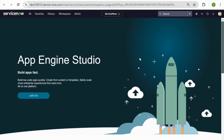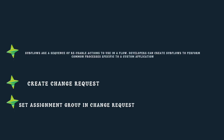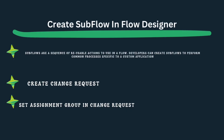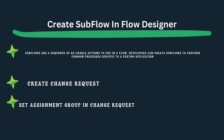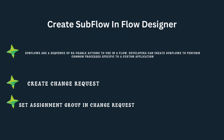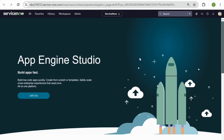We're going to be creating a sub flow called 'Change Request,' and we are going to be setting an assignment group on this change request. So let's go to our sub flow and put it together.